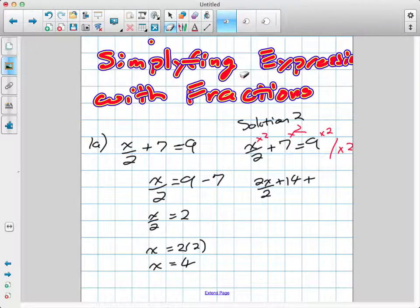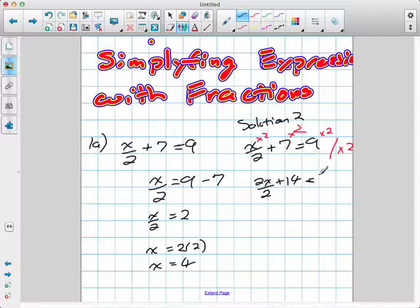we're left with 2x divided by 2 plus 14 equals 18. What's 2x divided by 2 going to become? x - we just talked about that. So x plus 14 equals 18.